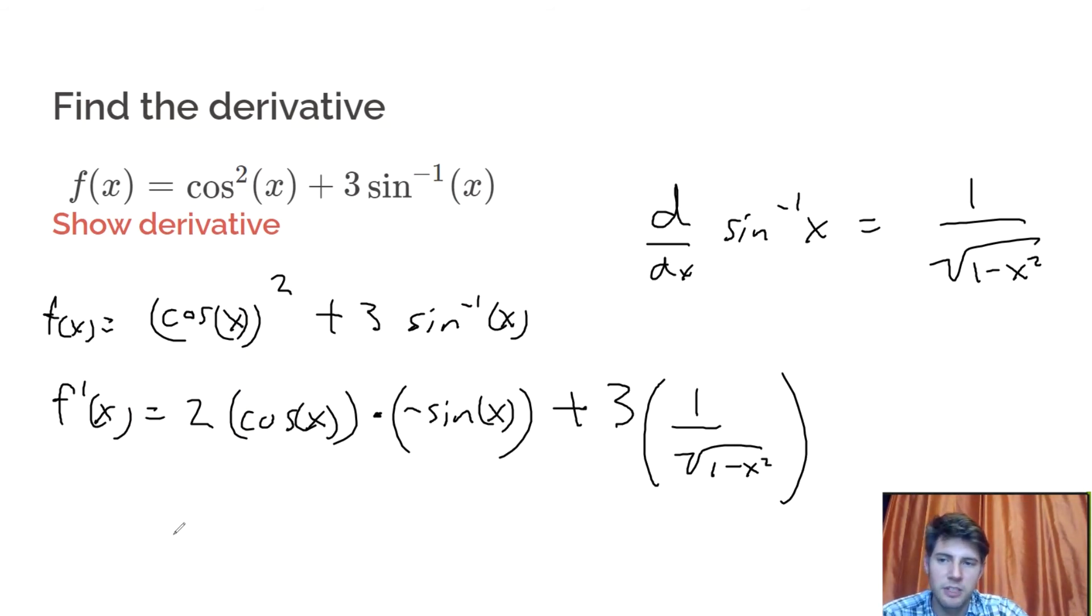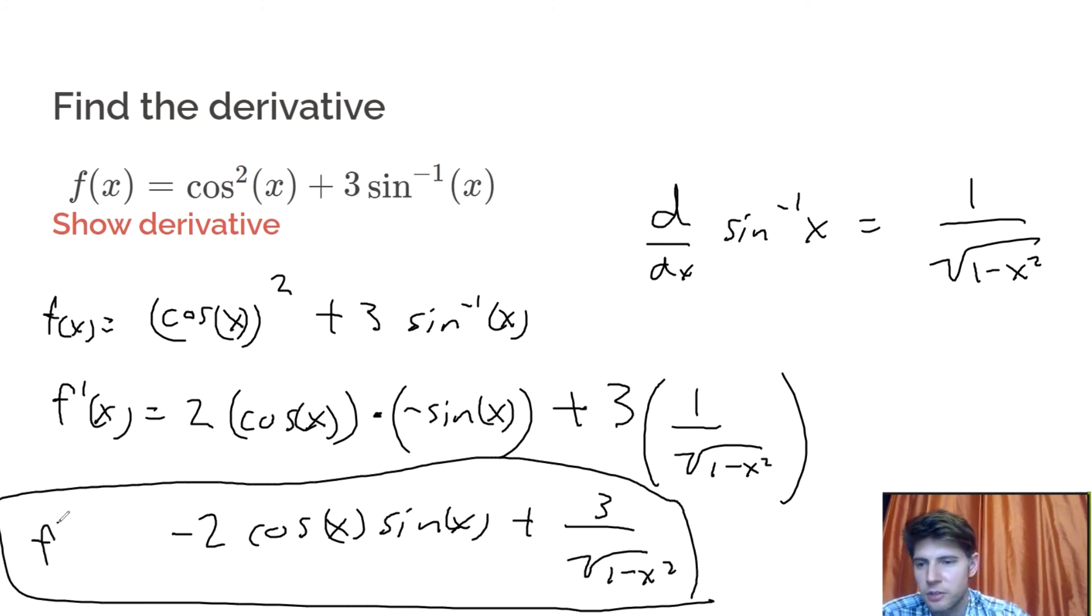I'm going to bring the minus in front. So this is negative 2 cosine x sine x plus, and we'll just put the 3 on top here. 3 over root 1 minus x squared. And that is the answer for our derivative.